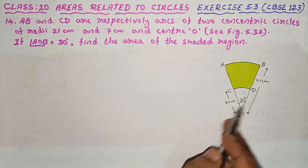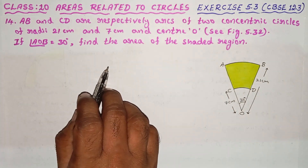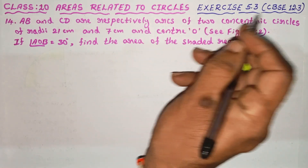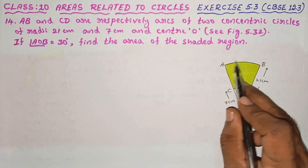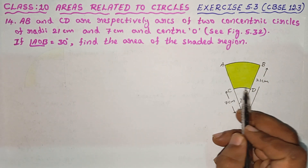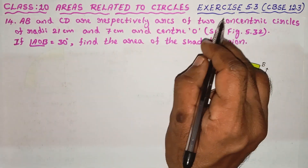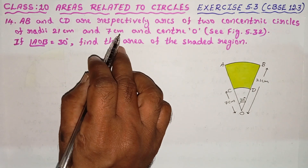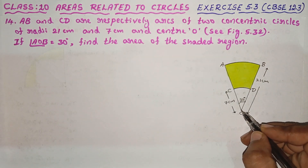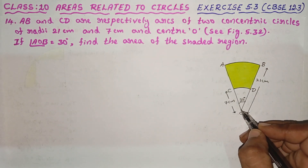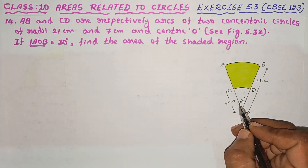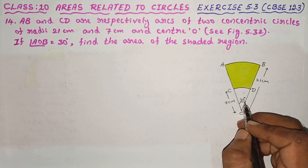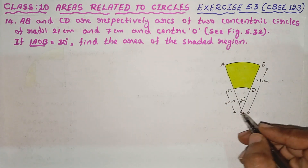Look at the question and look at the diagram — we will discuss. AB and CD are respectively arcs of two concentric circles of radii 21 cm and 7 cm and center O.